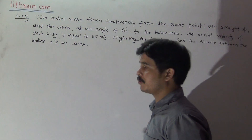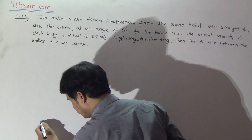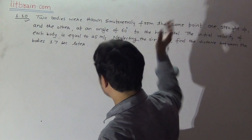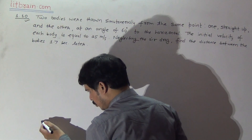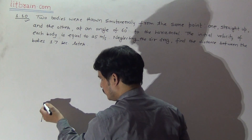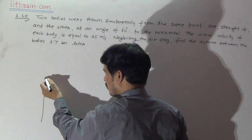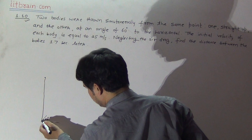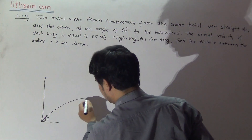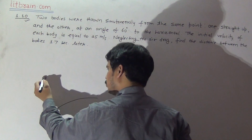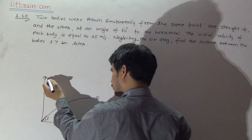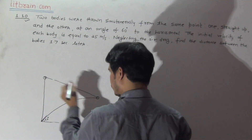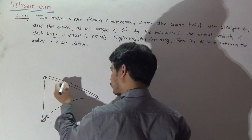First, understand the diagram of the question. Let this be the point from where the bodies are thrown. The first body is thrown vertically upward, and the second is thrown at an angle of 60 degrees to the horizontal. We have to find the distance between the positions of the first and second body after 1.7 seconds — that is, we need to calculate this distance x.